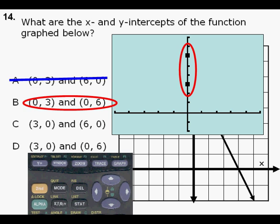We need an x intercept, so we know that can't be right, so we cross that off.